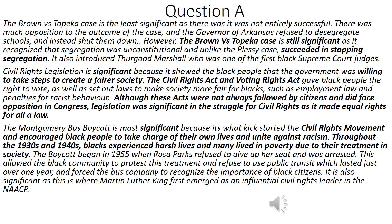The Brown v. Topeka case is the least significant, as it was not entirely successful. There was much opposition to the outcome of the case, and the governor of Arkansas refused to desegregate schools and instead shut them down. However, the Brown v. Topeka case is still significant as it recognized that segregation was unconstitutional and, unlike the Plessy case, succeeded in stopping segregation.